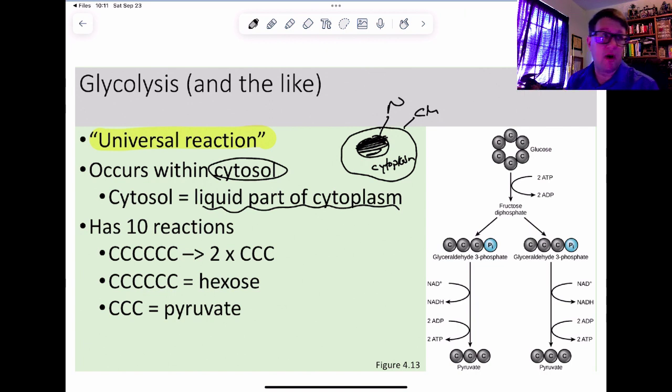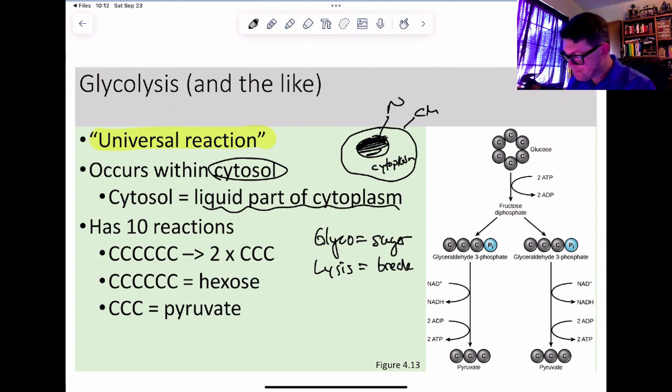Cytosol is not part of endoplasmic reticulum or mitochondria or Golgi apparatus or lysosomes or peroxisomes; it's everything in between. The term itself, glycolysis, tells us exactly what it's going to do. Glyco means sugar and lysos, which we've seen before, means break. So we're just going to break up a sugar.